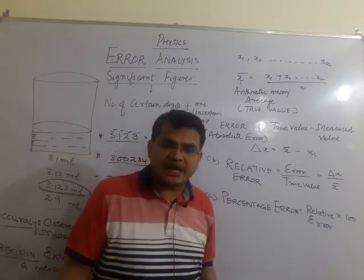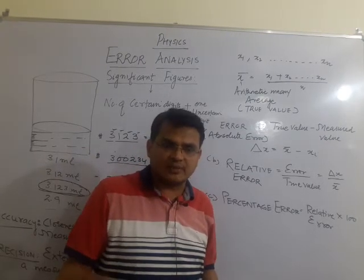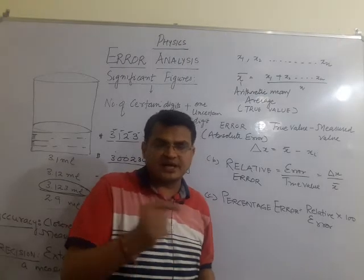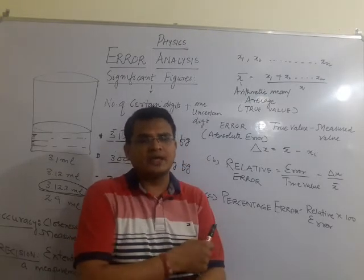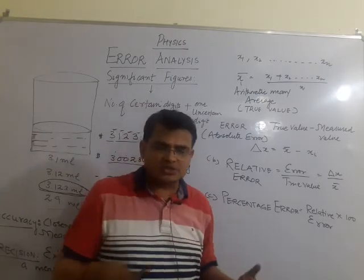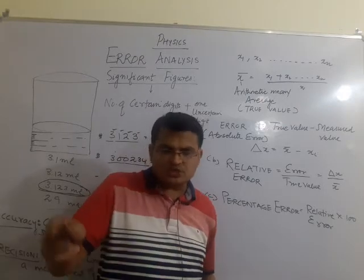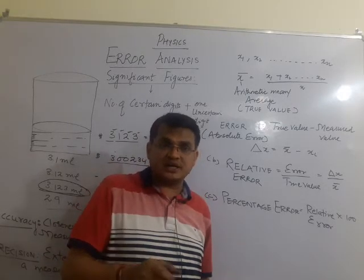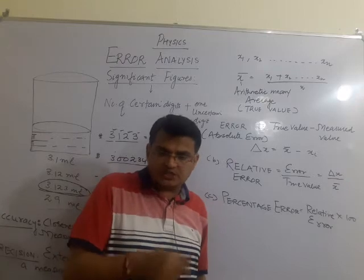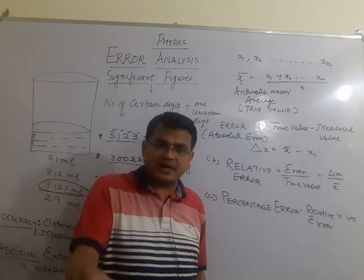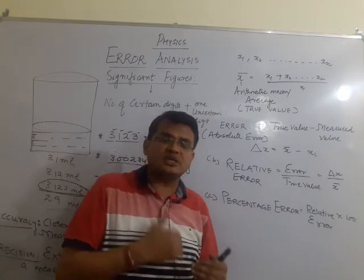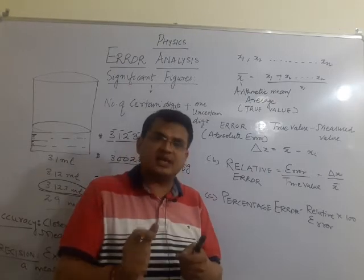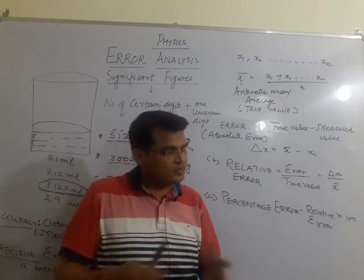For example, with a vernier caliper, if the zero of the vernier scale does not coincide with the zero of the main scale, that is called instrumental error. Similarly, with a stopwatch in a simple pendulum experiment, if we start or stop the watch before or after the oscillation, there is an instrumental error.